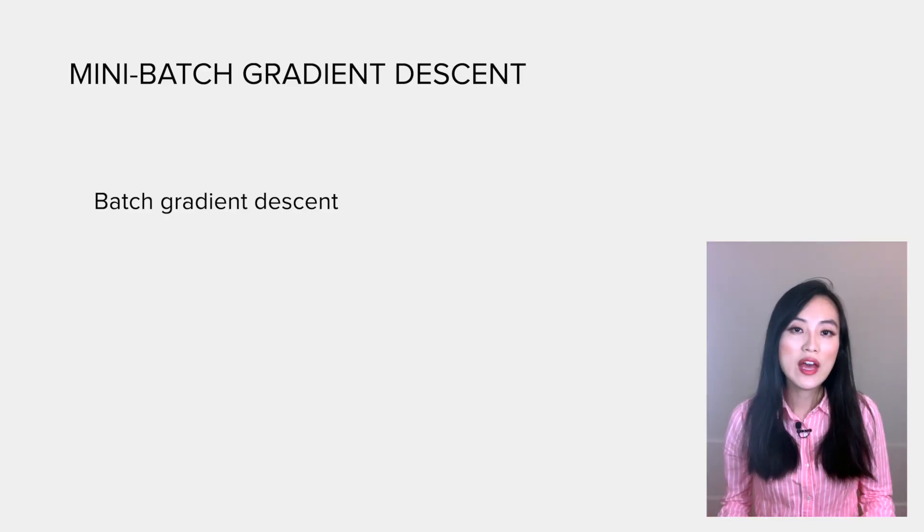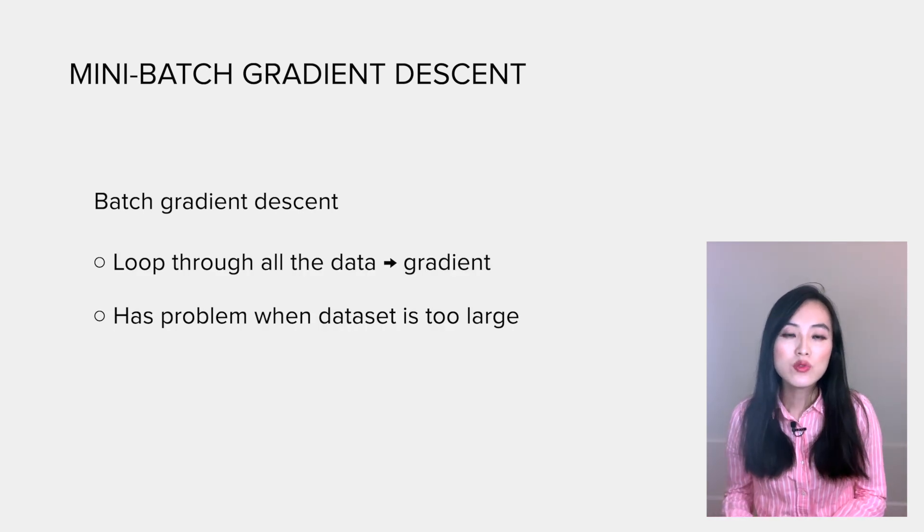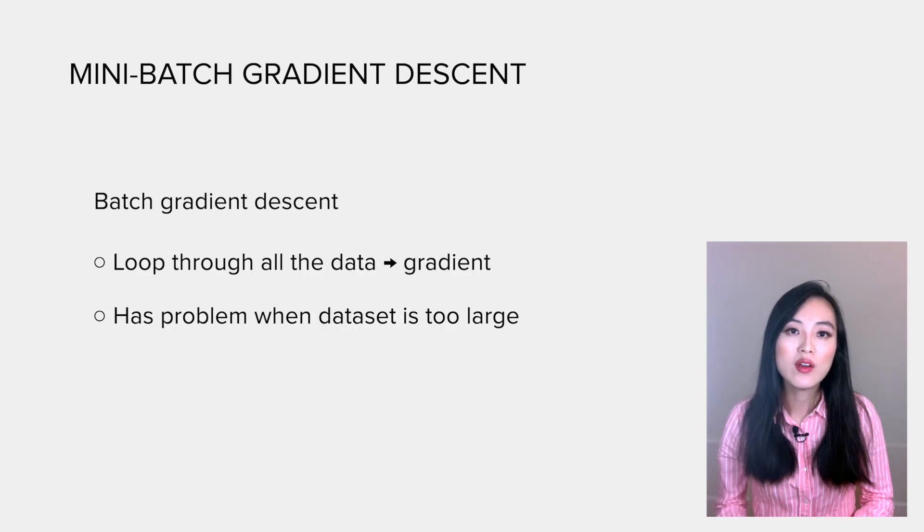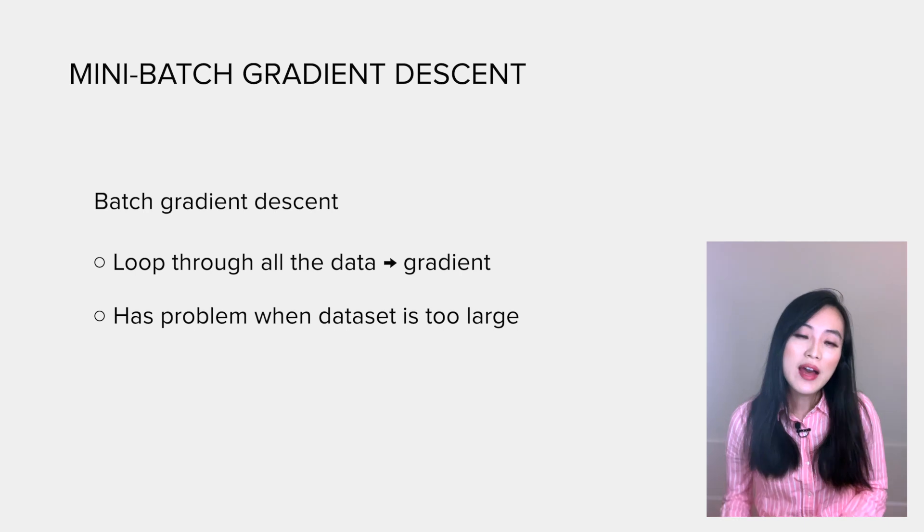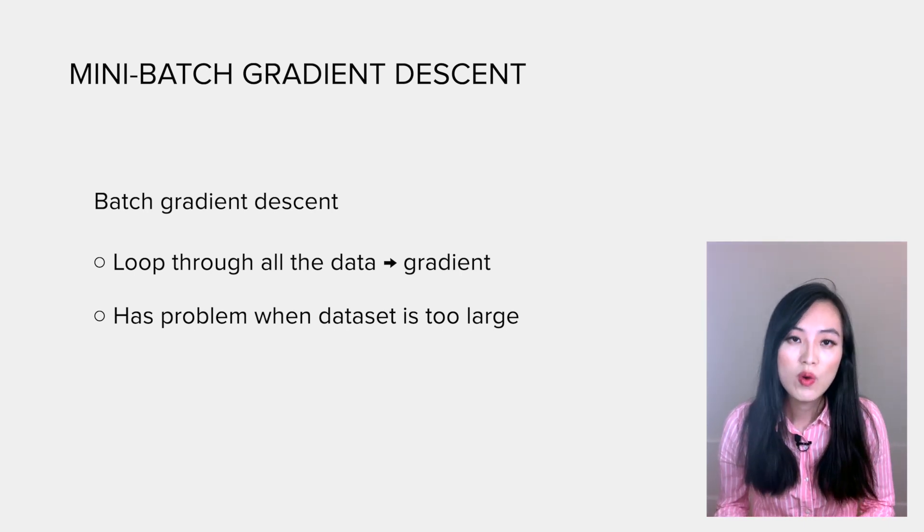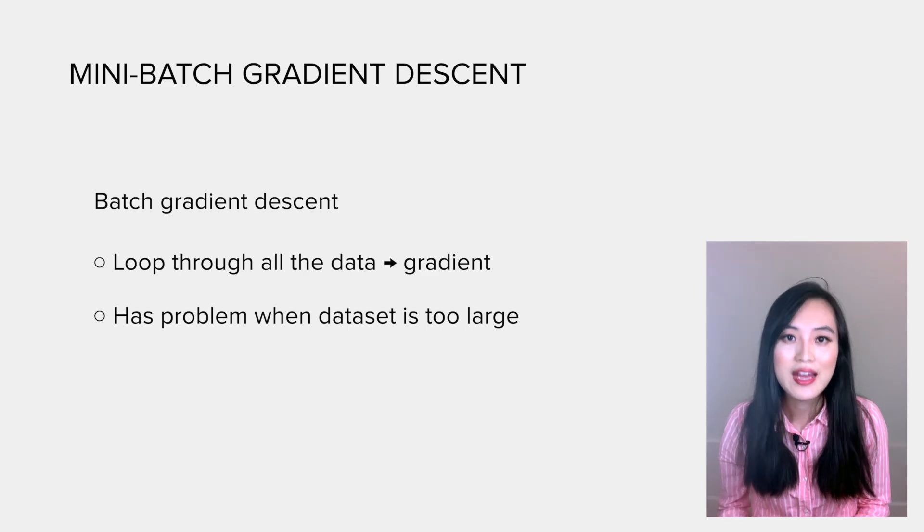The gradient descent we have just implemented is a batch gradient descent. It loops through the entire data set in order to make one step towards the target. This can be very slow when the data set is large. It may happen in real world conditions when we need to deal with millions, even billions of records.